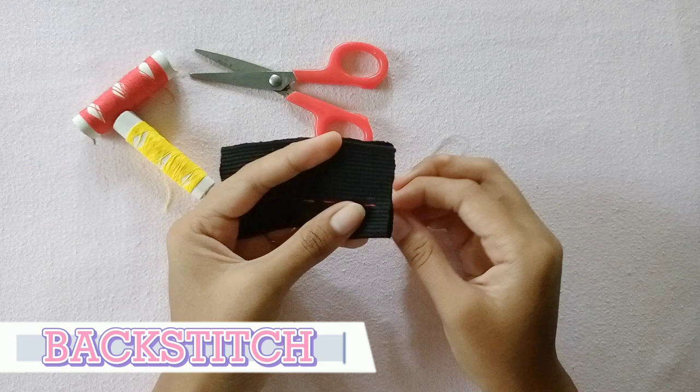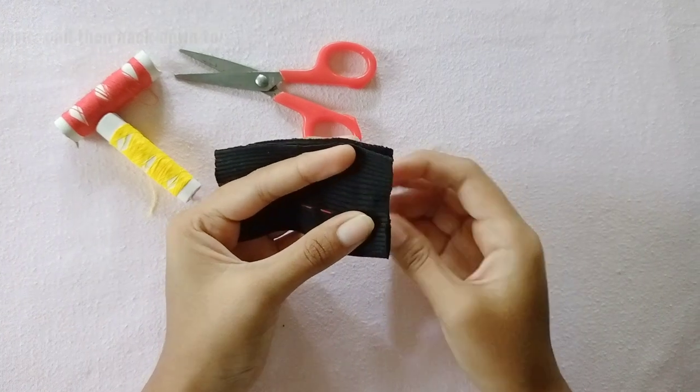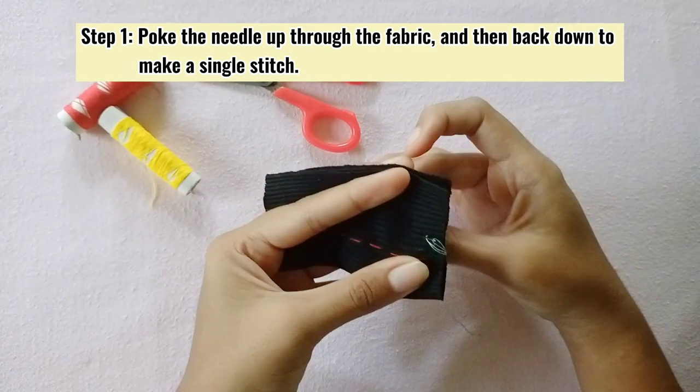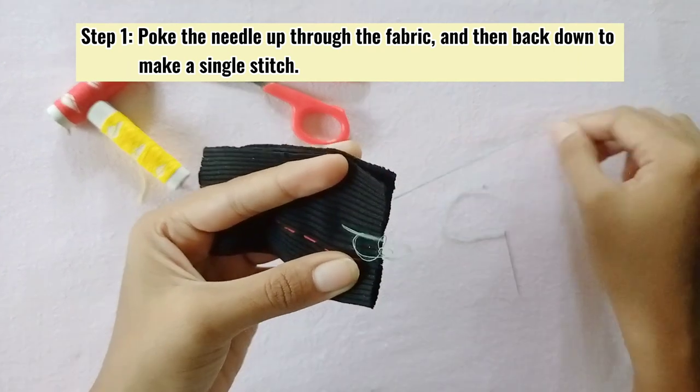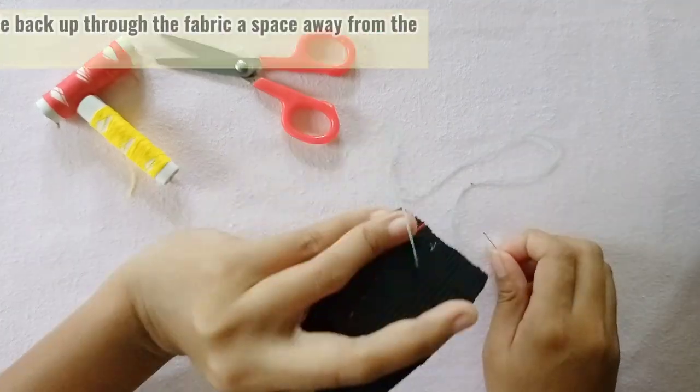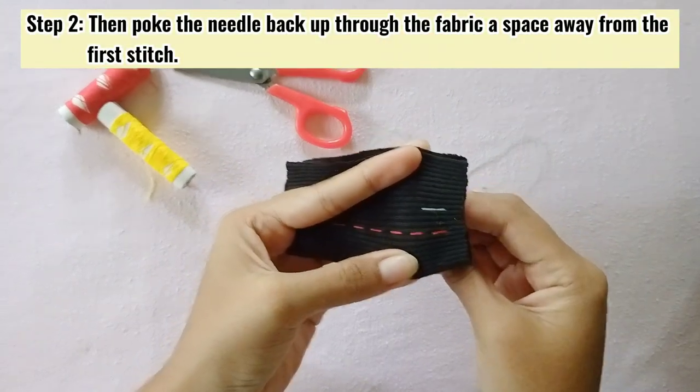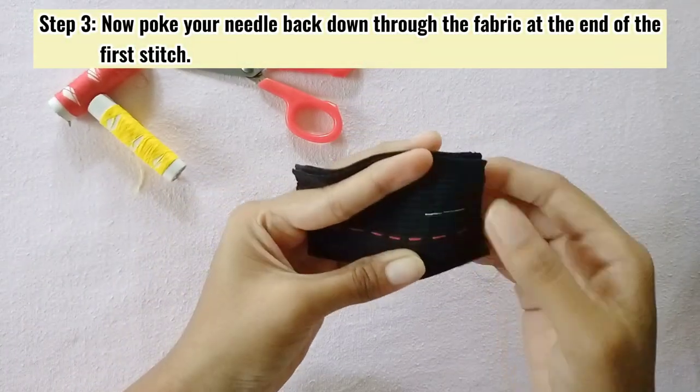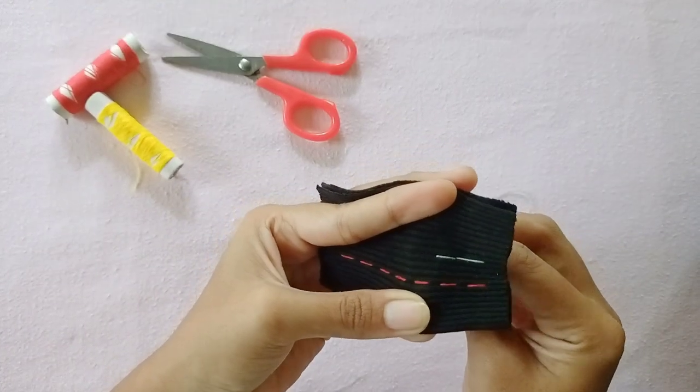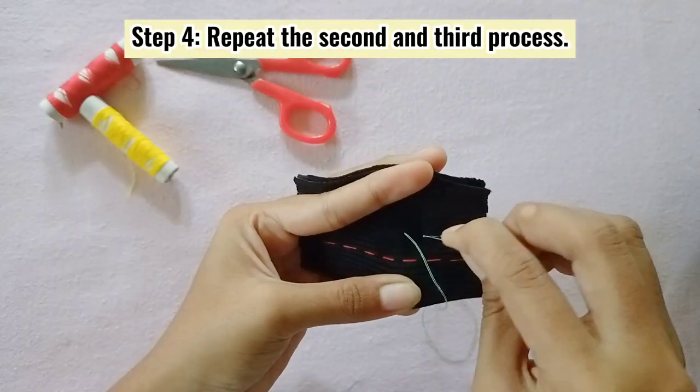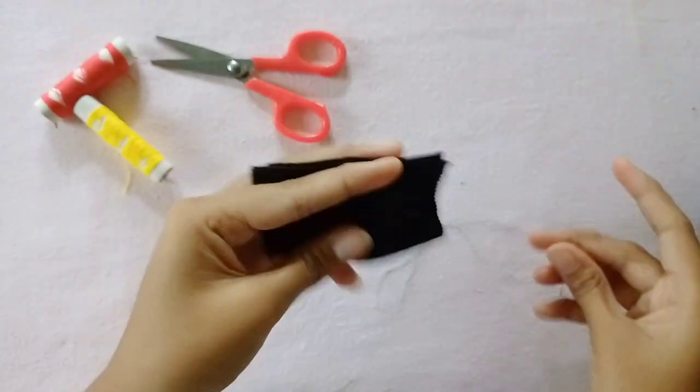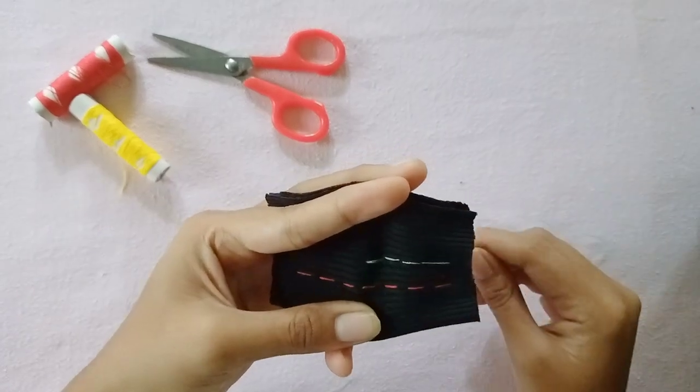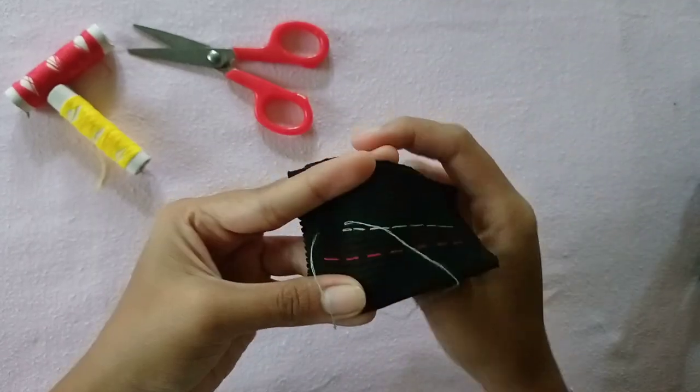Next is the back stitch. One of the main purposes of the back stitch is to sew strong seams without a sewing machine.